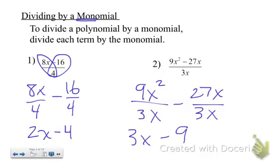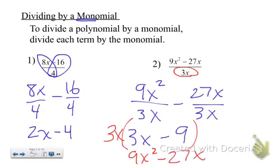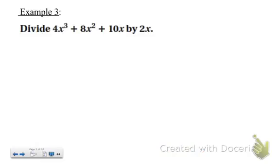So remember, division is the opposite of multiplication. So if you wanted to make sure that you did it correctly, you could always multiply through again to make sure. 3x times 3x is 9x squared. 3x times 9 becomes minus 27x.